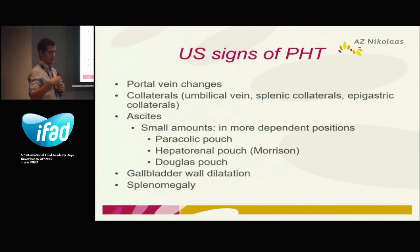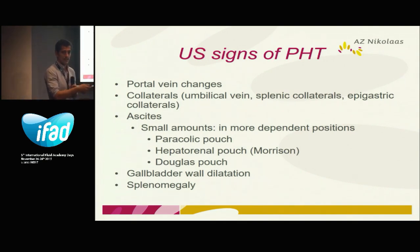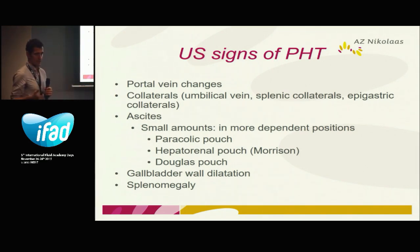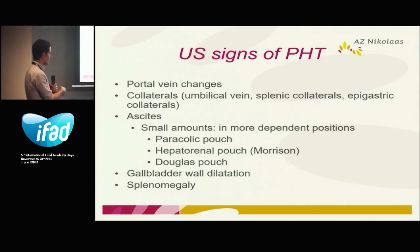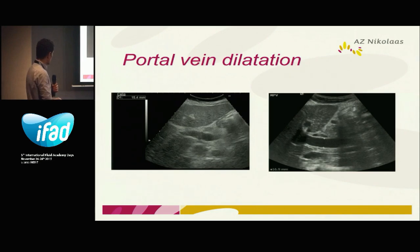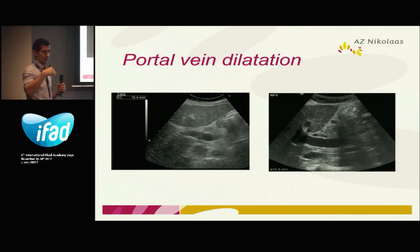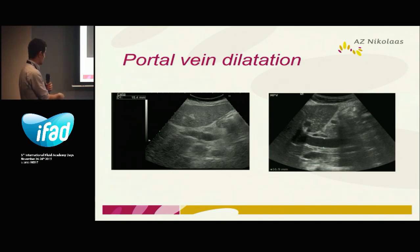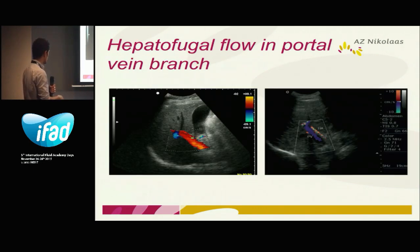If liver cirrhosis is quite severe and the patient has, for example, thrombocytopenia, we can have signs of portal hypertension. The signs of portal hypertension are: splenomegaly, ascites, and collaterals. Portal hypertension means the tension in the portal vein is too high, leading to dilatation of the portal vein. Here you see a clear dilatation of the portal vein.